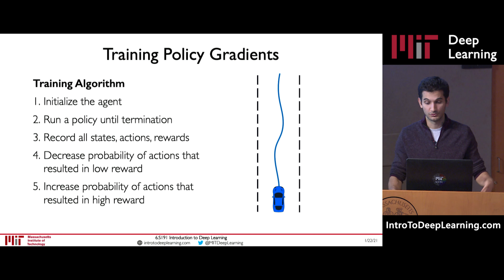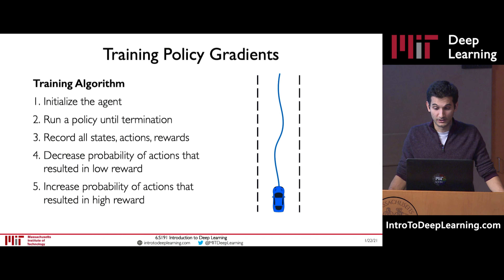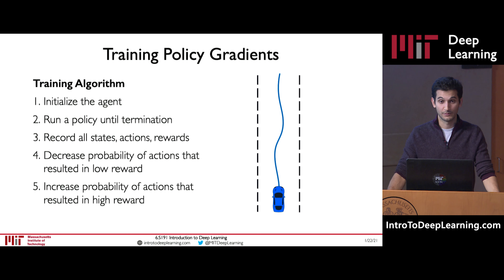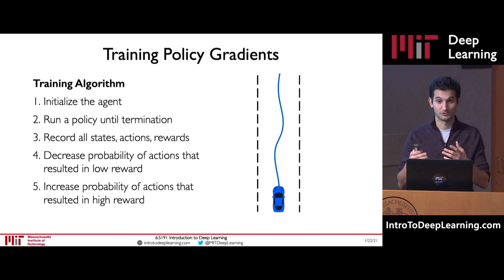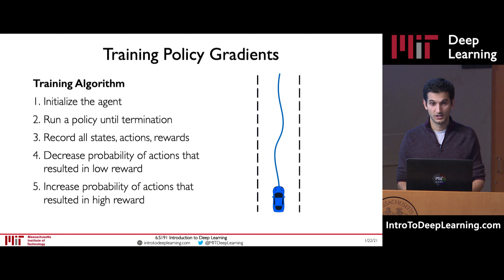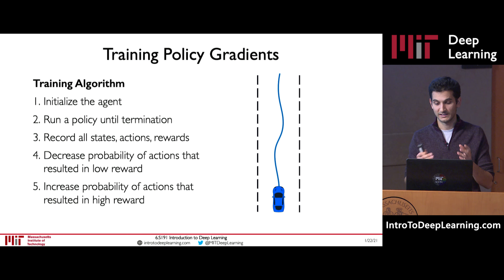Eventually the agent starts to follow lanes without crashing — which is really incredible because we never taught this algorithm anything about lanes or roads. All we told it was when it crashed and when it survived; all we gave it was a reward signal about survival. From that, it learned that to maximize its rewards it should detect lanes, detect other cars, and avoid crashes. The remaining question is: how can we actually update our policy on every training iteration to decrease the probability of bad actions and increase the probability of good actions?